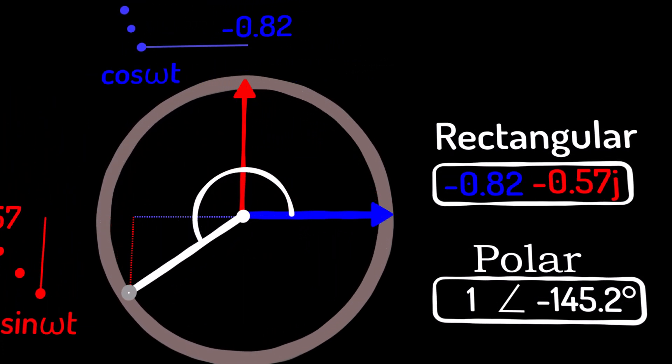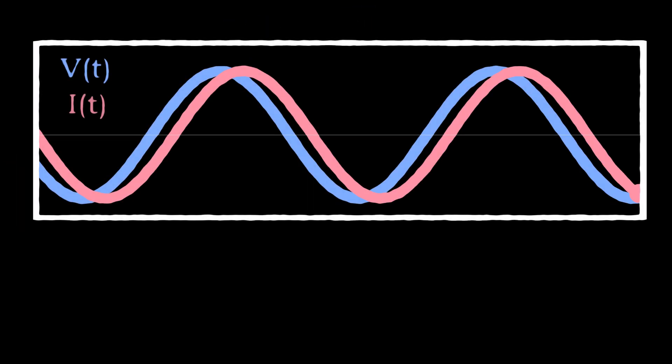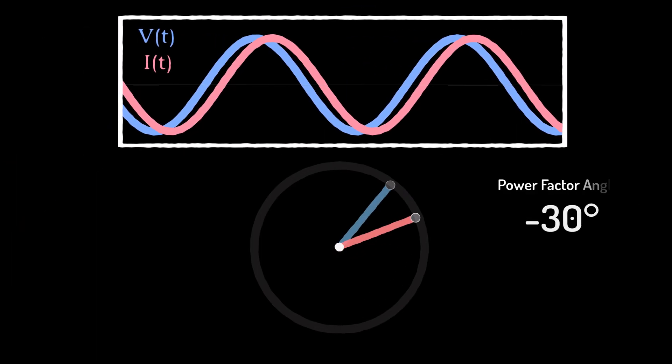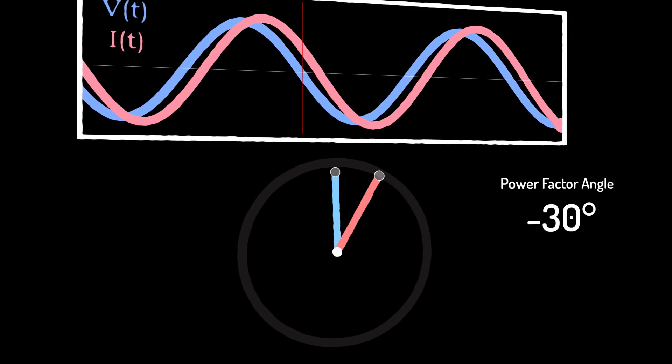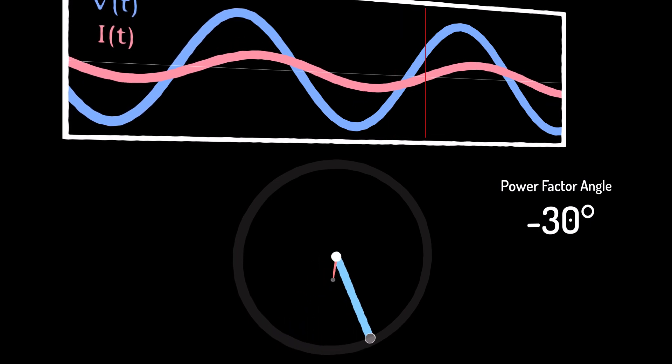Steinmetz proposed the use of these rotating phasors for voltage and current in power systems. They actually give everything we need to model voltage and current. If the voltage and current get larger, the phasor grows.